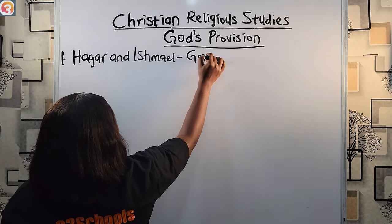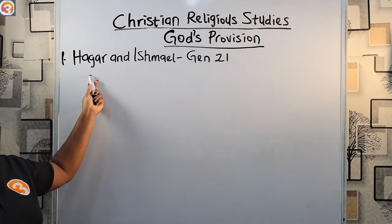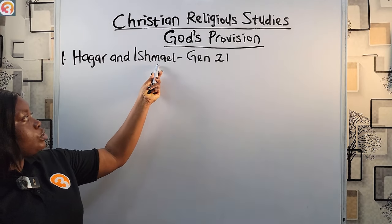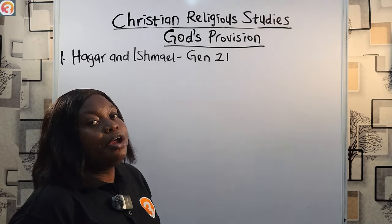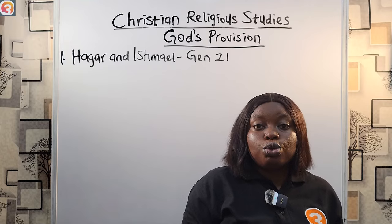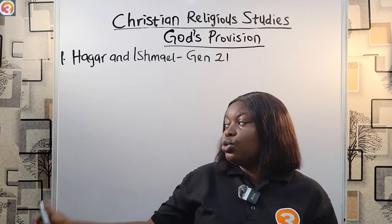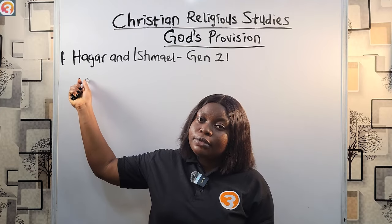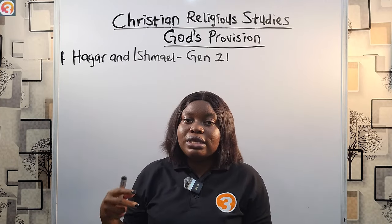You'll find this in Genesis chapter 21. Hagar was Sarah's maid and Ishmael was the son of Abraham and Hagar. After Sarah gave birth to her own child, Isaac, Hagar became disrespectful and Sarah asked Abraham to send her away. Although Abraham did not want to, God asked him to do as Sarah had told him. So Abraham gave Hagar bread and water and sent her and Ishmael on their way.